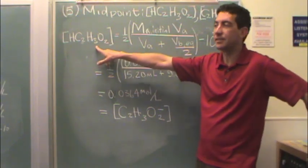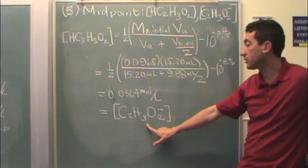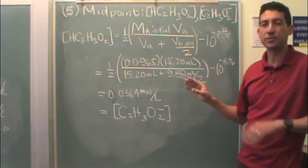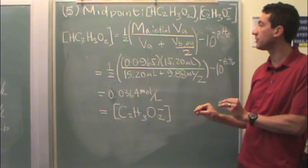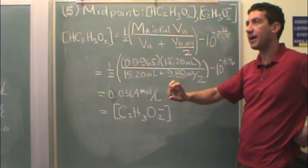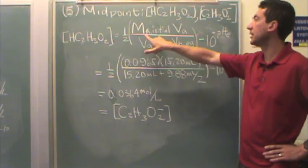Essentially, what's going to happen is the acetic acid concentration, which will equal the acid ion because you're at the midpoint, and so those two concentrations have to be equal. That's going to be half, because you're reacting away half of it in order to get to the midpoint.